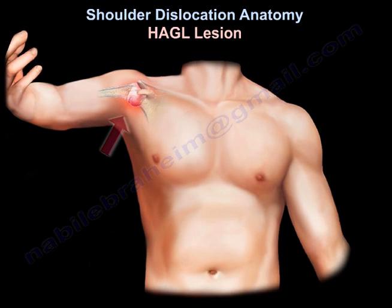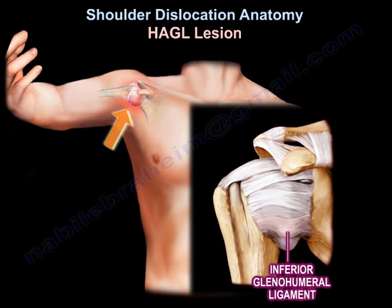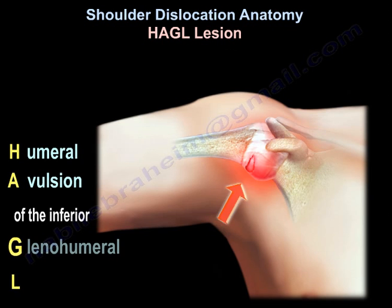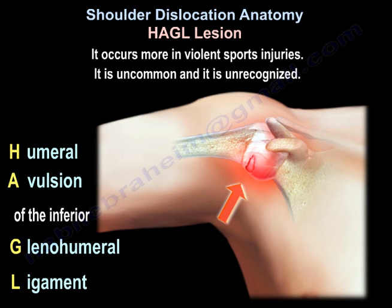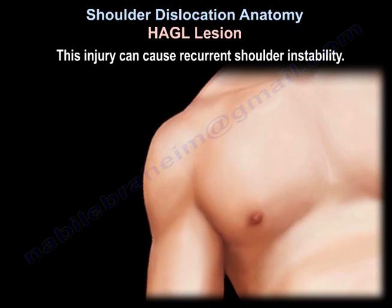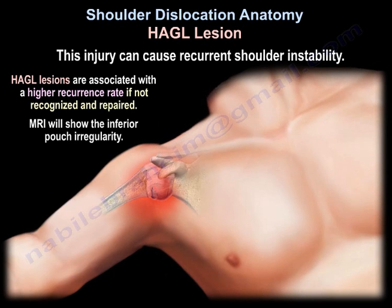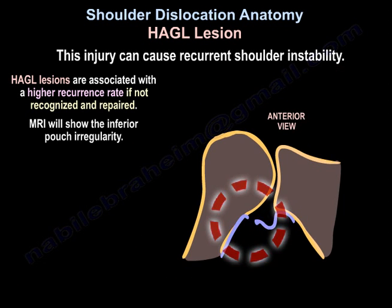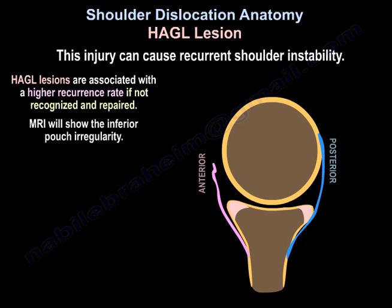The HAGL lesion is humeral avulsion of the inferior glenohumeral ligament. It is more common in violent sports injuries. It is uncommon and often unrecognized. It can cause recurrent shoulder instability and is associated with a higher recurrence rate if not recognized and repaired. MRI will show inferior pouch irregularity.